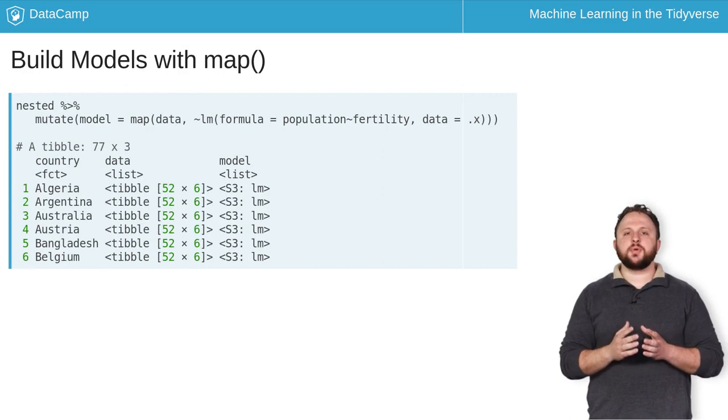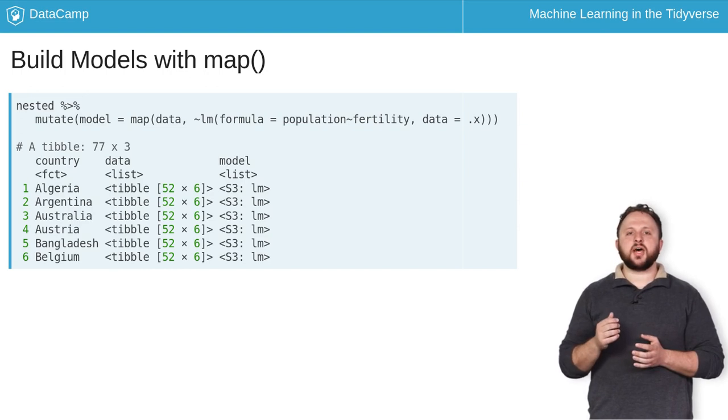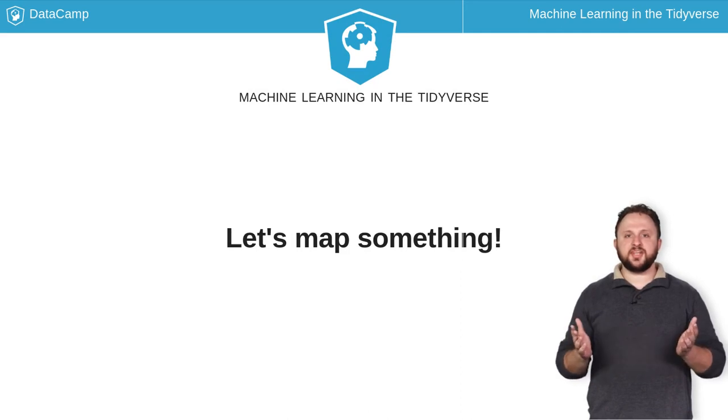You can also use map to build models for each country. Here, the lm function is used to build linear models to predict the population using the fertility feature. You can define the model using the formula parameter and provide the data for each model using the .x approach to refer to each country's data frame when mapping. So, let's map some data.